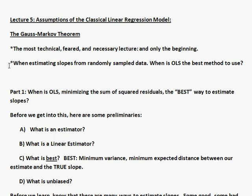So overall what we're trying to do is answer the question: when we're estimating slopes from some randomly collected data, when is ordinary least squares—these formulas we were working with earlier to find the slope that minimizes the sum of the squared residuals—when is that the best method to use in order to find our slopes and our y-intercept?